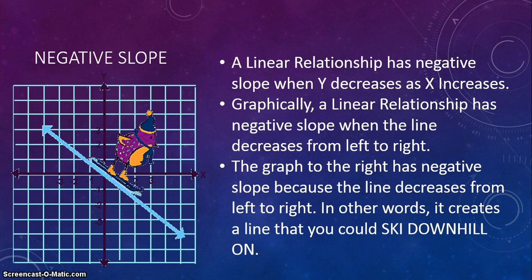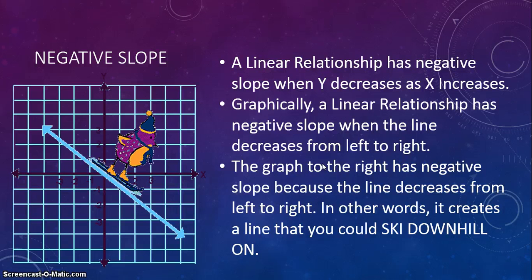Negative slope: a linear relationship has a negative slope when y decreases as x increases. Graphically, a linear relationship has a negative slope when the line decreases from left to right. The graph to the left has a negative slope because the line decreases from left to right — in other words, it creates a line that you could ski downhill on, like a penguin skiing downhill.